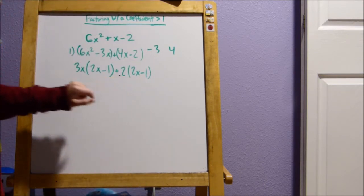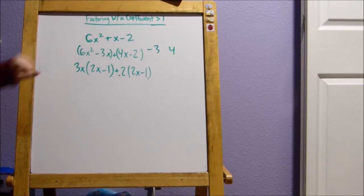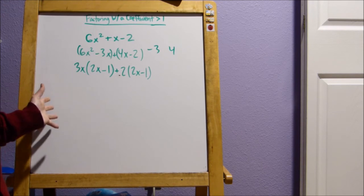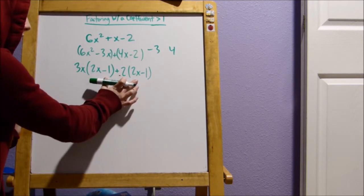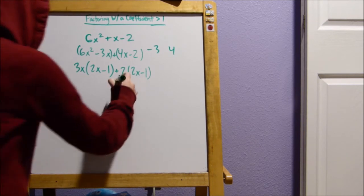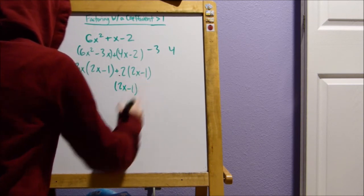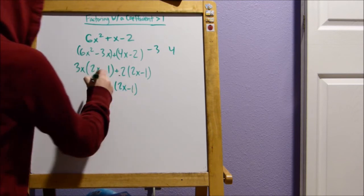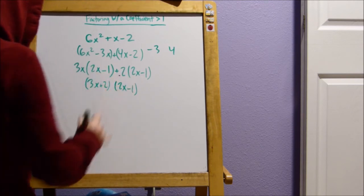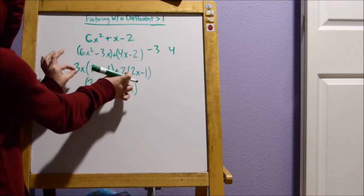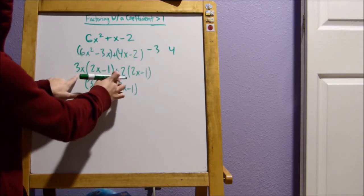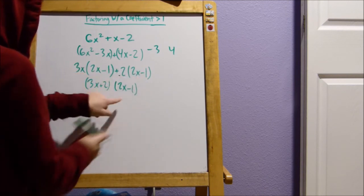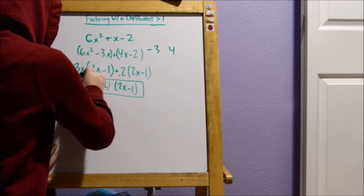Once you reach this step here, you can combine like terms. So we can see that we have 2, 2x minus 1. So that can be one of the factors, I guess. And then 3x plus 2. So you just take these outside numbers, outside of the parenthesis numbers, and you add them together. And then whatever this one is, you just have one of these in the final answer. So that's our answer.